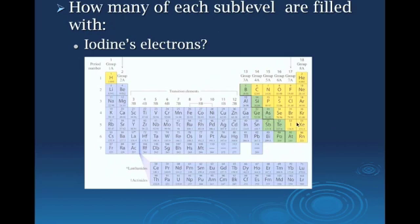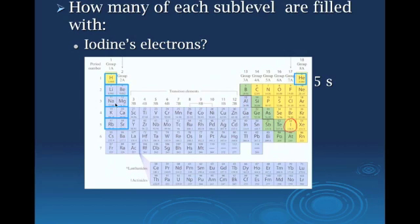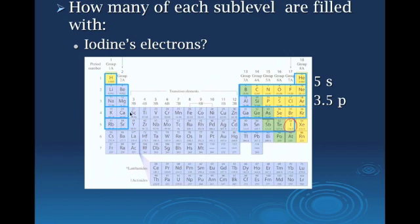What about iodine? Iodine is also in group 17, but on row five. Reading to iodine, we go through five S sub-levels. For P, we read through three complete P's and a partial P — so three and a half P's. We also read through two D sub-levels, but we didn't hit any F's at all, so zero F's.